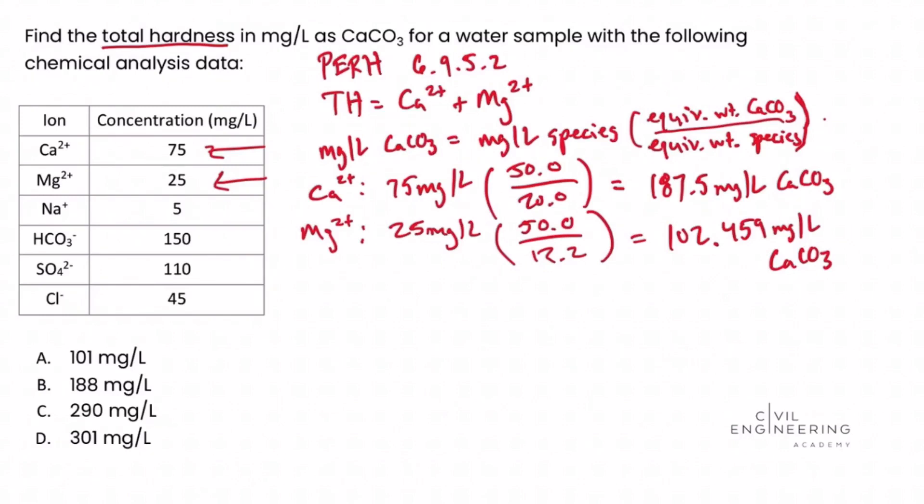We said before that the total hardness is equal to the hardness contributed by the calcium ion and the magnesium ion. So all that's left to do is add both of these up: 187.5 plus 102.459, and that gets us an answer of 289.959 milligrams per liter of calcium carbonate, which we're asked to solve for in the problem statement. Looking at the answer choices, that is closest to answer choice C.